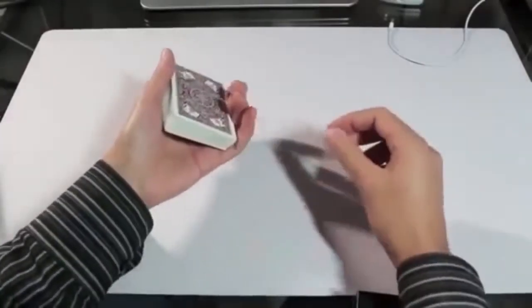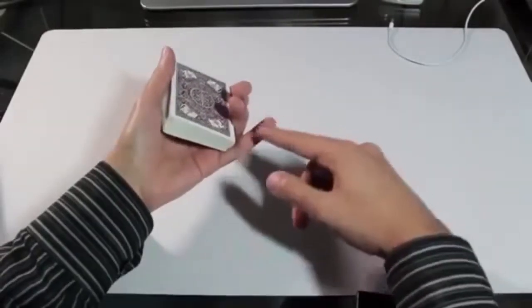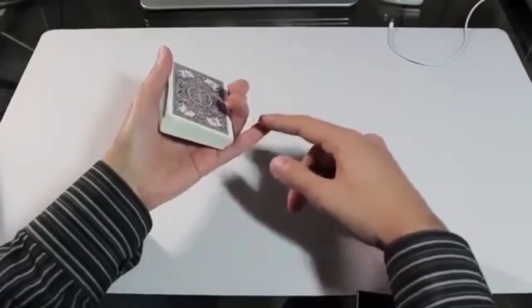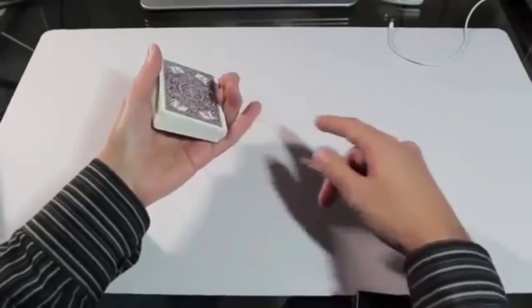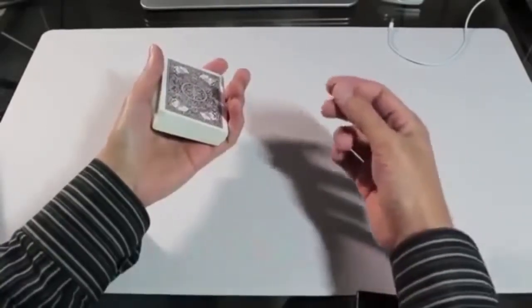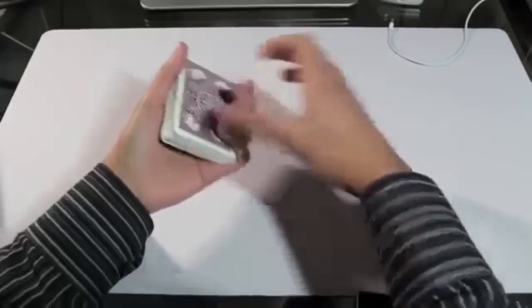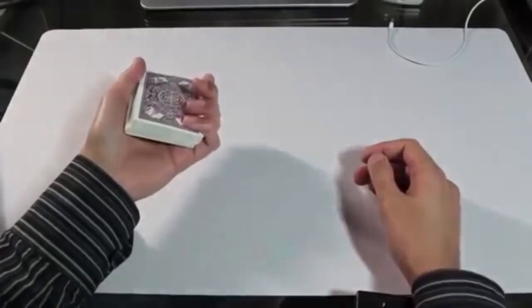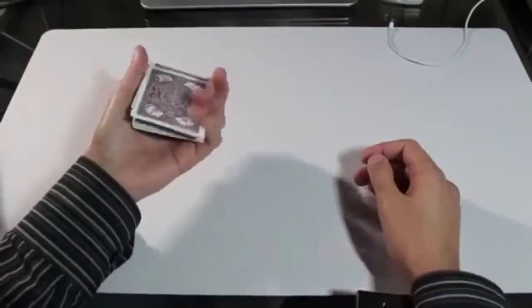So if your pinky is extremely dry, this is going to be difficult to do. If that is the case, you might want to lick your pinky a little bit or maybe put some lotion on it. You just need a little bit of moisture. You need some friction between your pinky and the top card. And that will help you flick this card out.